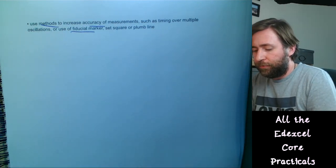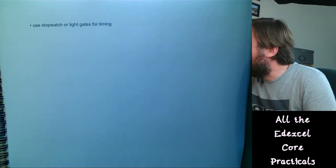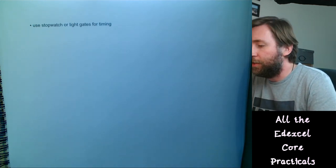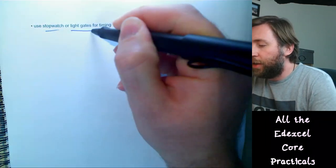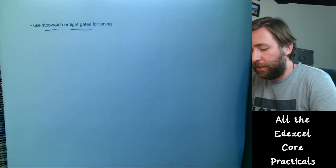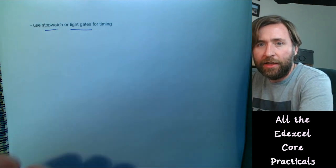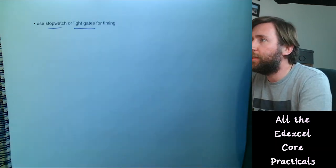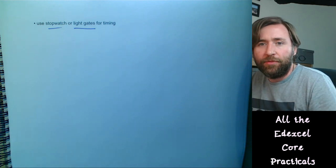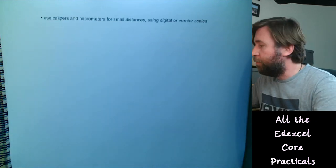You need to use digital instruments including multimeters for a range of measurements. You need to know methods to increase the accuracy of measurements such as timing over multiple oscillations, use of fiducial markers, set squares, or a plumb line. You also need to be able to use stopwatches or light gates, and understand the comparison between those two approaches — and again this applies to all exam boards.